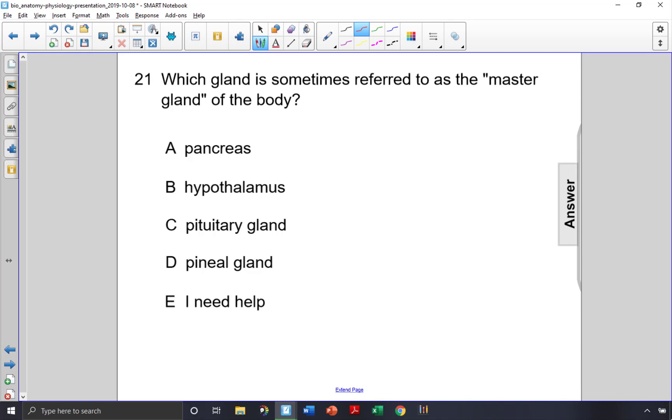Which gland is sometimes referred to as the master gland of the body? Choice A, pancreas, looks like a reasonable answer because the pancreas is a vital organ and it does secrete many hormones.